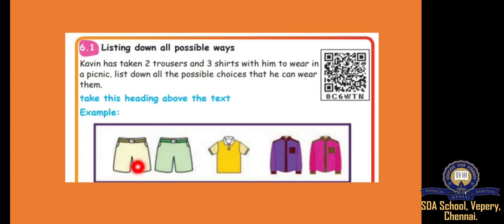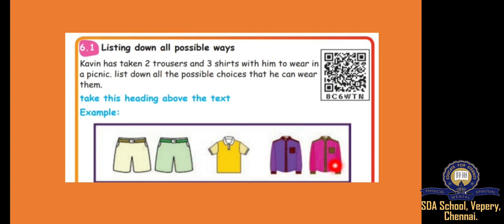See here — how many trousers are there? Two trousers are there, one is yellow and one is green. How many shirts are there? There is one purple and one pink — so two trousers and three shirts are there. One boy named Kevin has two trousers and three shirts with him. He bought this for a picnic. How can he wear this? He doesn't have three trousers, only two trousers, but he has three shirts.